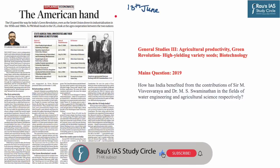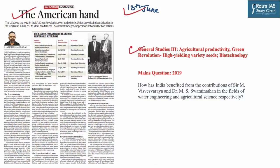The first article of our session is based on the news appearing in Indian Express, June 13th. This article pertains to GS3 syllabus, specifically to agricultural productivity, Green Revolution, high-yielding variety seeds and biotechnology. We have taken a mains question from 2019: how has India benefited from the contributions of Sir M. Visvesvaraya and Dr. MS Swaminathan in the fields of water engineering and agricultural science respectively? The approach for this question has been given in the Word and PDF document.